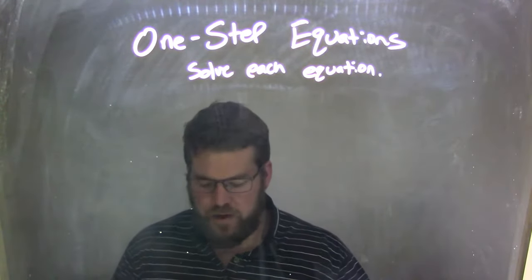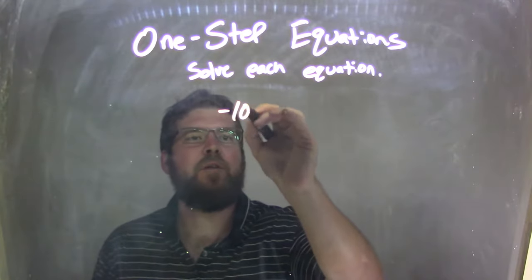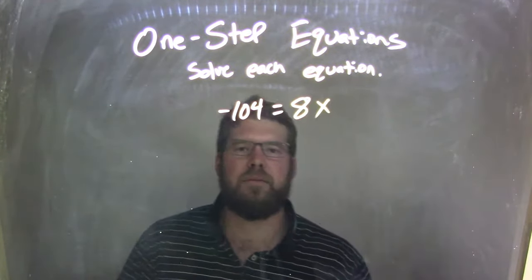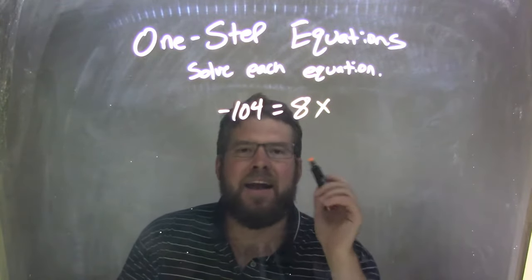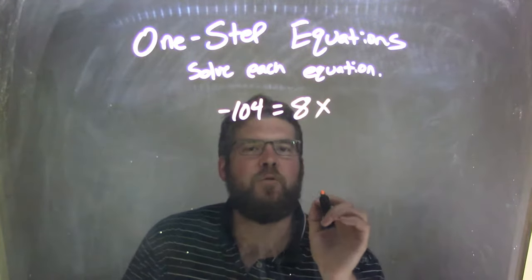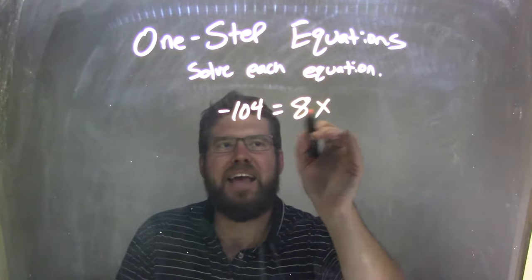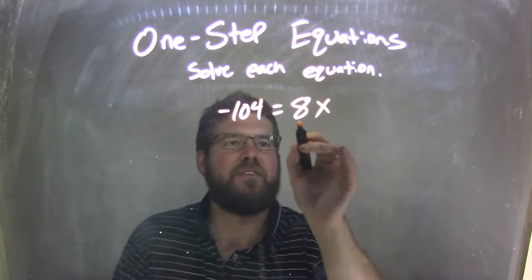So if I was given this equation, negative 104 equals 8x. This is tricky. We have 8 times x there, and I need to get x by itself. So, opposite of multiplication, which is going on, right? 8 times x. 8x is just 8 times x. Opposite of multiplication is division.